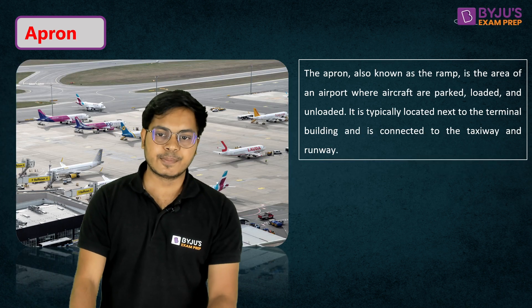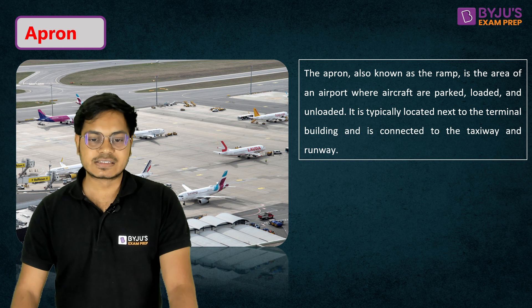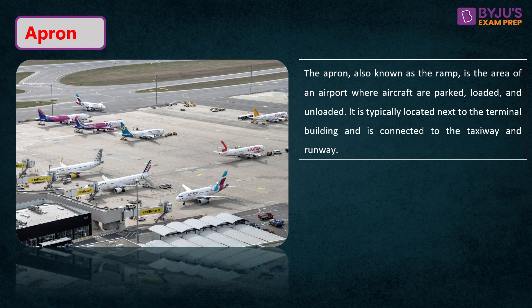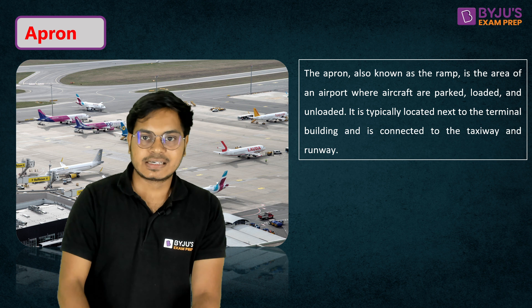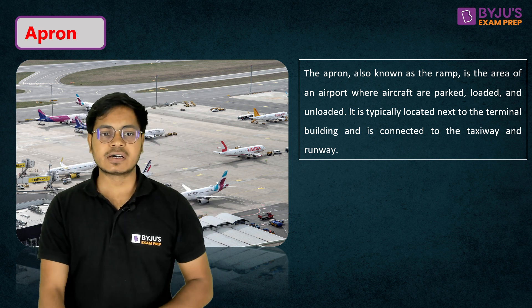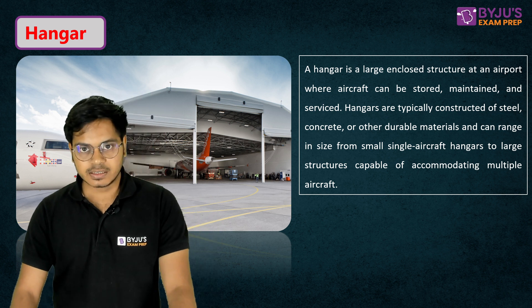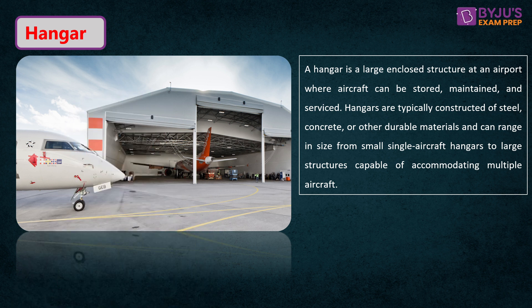Moving on to the next component: the apron. The apron is essentially a parking area for all aircraft, where they stand and wait while passengers or cargo are loaded. After the apron, the next component is the hangar. A hangar is utilized by the airline when an aeroplane requires maintenance, cleaning, storage, or any other service. It is the building in which aeroplanes are kept — a structure capable of accommodating multiple aircraft.